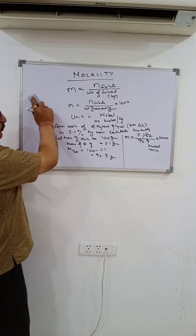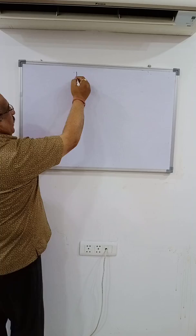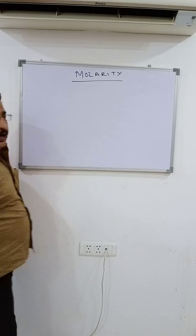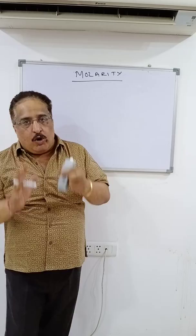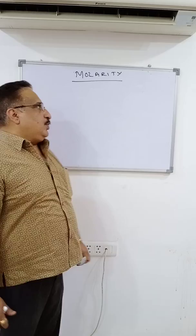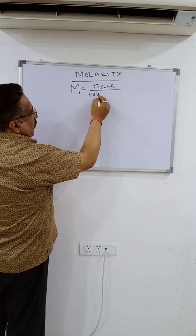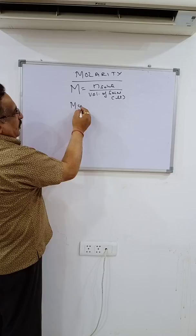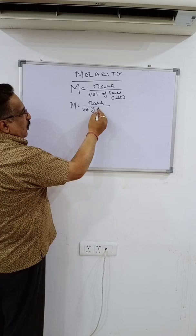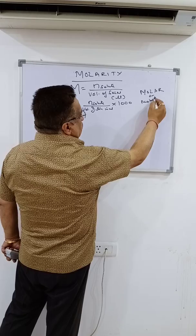The next topic is molarity. Molarity is a volume-dependent property. It can be defined as the number of moles of the solute per unit volume of the solution, or number of moles of solute per liter of solution. It is denoted by capital M. Molarity equals number of moles of solute upon volume of solution in liters, or if in mL, divided by 1000. Its unit is molar or moles per liter.